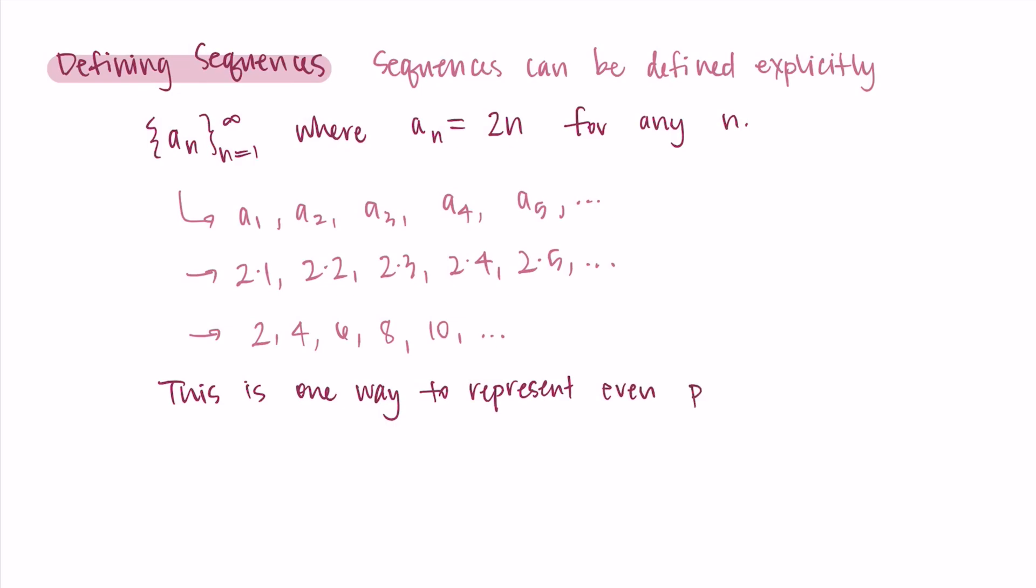So 2n for any n, where we're taking n from 1 to infinity, this is the positive even integers: 2, 4, 6, 8, 10, 12, et cetera, forever and ever. This is an infinite sequence.